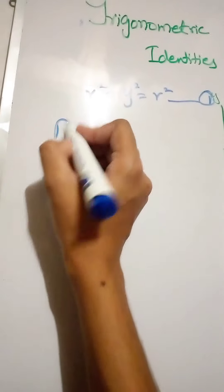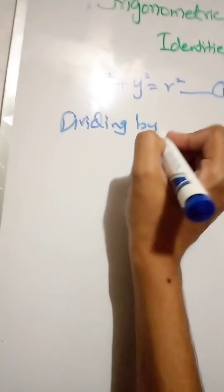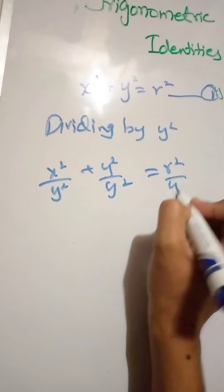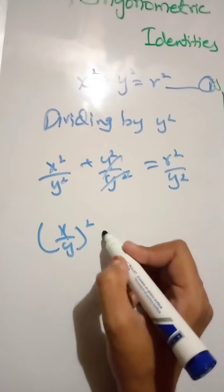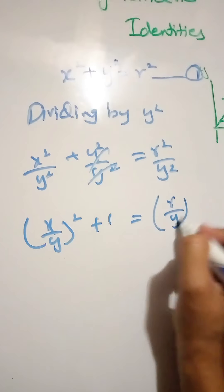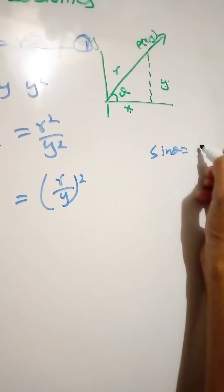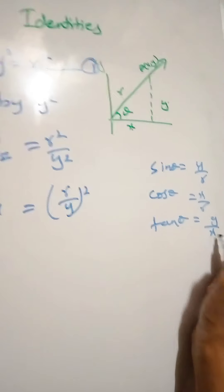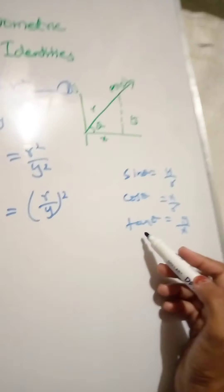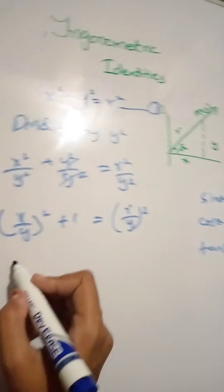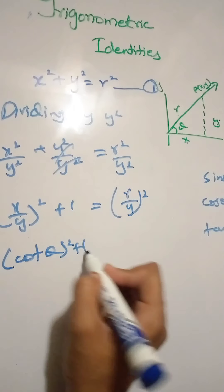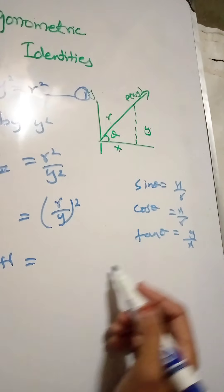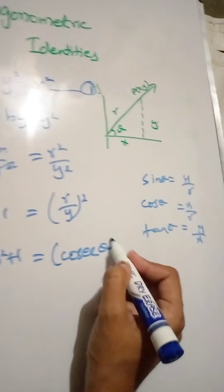Now dividing by y-squared: y-squared by y-squared, plus x-squared by y-squared, equals r-squared by y-squared. So this gives us 1 plus cot-theta, and here we have r by y, which is cosec-theta. y by r is sin-theta, x by r is cos-theta, x by y is cot-theta, so cot-squared theta plus 1 equals cosec-squared theta.